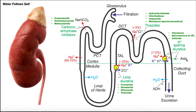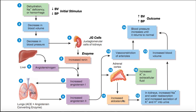Aldosterone actually upregulates this transporter protein. When there's more aldosterone, we get more of this transporter, and if there's more of this transporter, we reabsorb more sodium and more water. We also end up excreting more potassium and hydrogen ions. So if I have more aldosterone, there's more water reabsorbed into the blood, resulting in a greater blood volume, and greater blood volume means greater blood pressure.